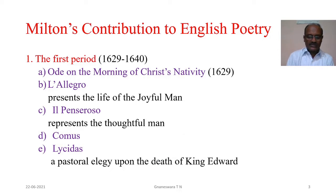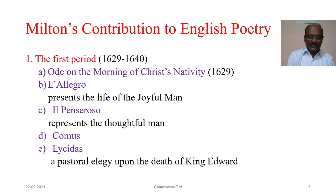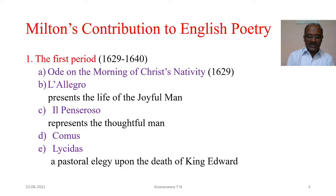Milton's contribution to English poetry: Milton's poetic creation is divided into three periods. The first period covers his student life at university. He composed poems of remarkable maturity and promise. The early poems of Milton are a sign of the greater works in his later life. During this period, he composed Ode on the Morning of Christ's Nativity, L'Allegro, Il Penseroso, and Comus.